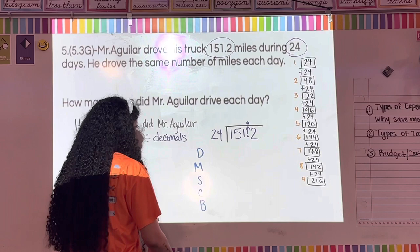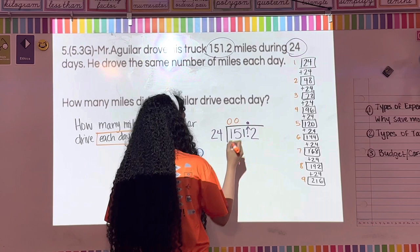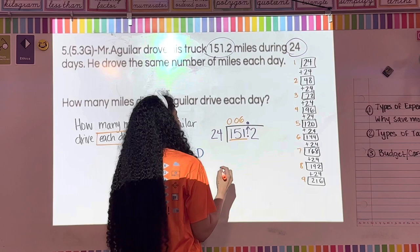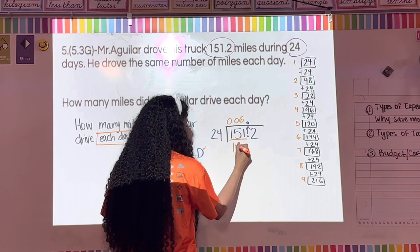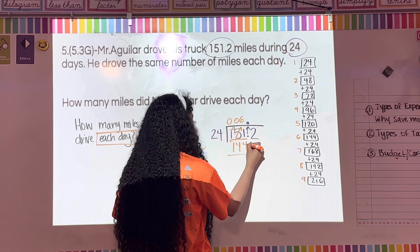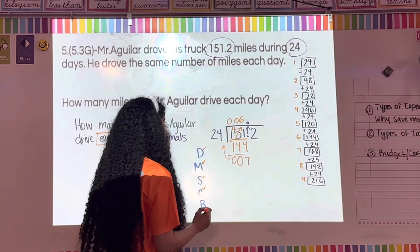Starting division: how many times does 24 go into 1? Zero. Into 15? No — put zero and move across. Into 151? Six times. Put 6 above. Multiply: 24 times 6 is 144. Subtract: regroup — eleven minus four is seven, four minus four is zero, one minus one is zero. Remainder is 7.